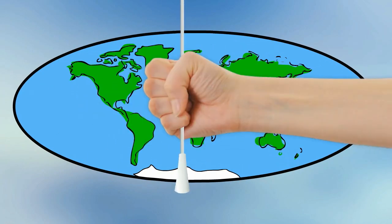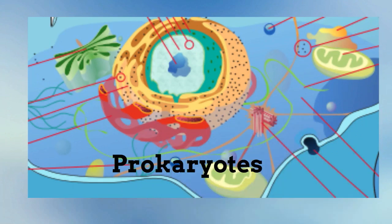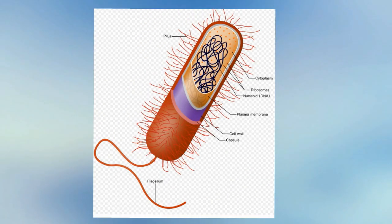All members of this kingdom do not have a nucleus or membrane bound organelles. Therefore, they are classified as prokaryotes. They do have a cell wall, genetic material, cytoplasm, and ribosomes.